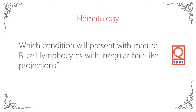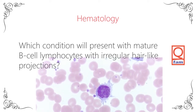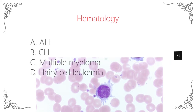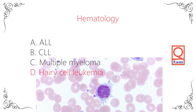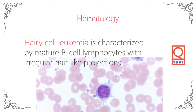Which condition will present with mature B-cell lymphocytes with irregular hair-like projections? The answer is hairy cell leukemia. Hairy cell leukemia is characterized by mature B-cell lymphocytes with irregular hair-like projections.